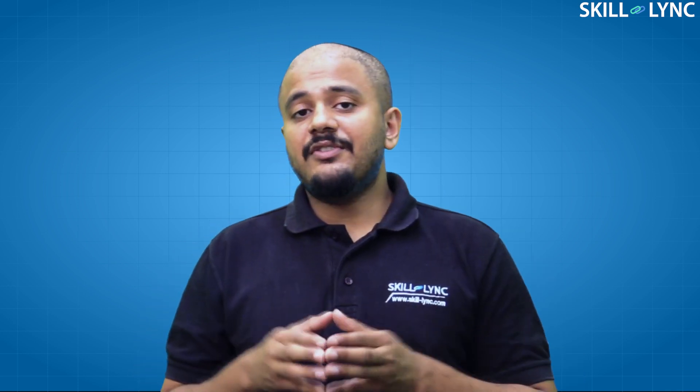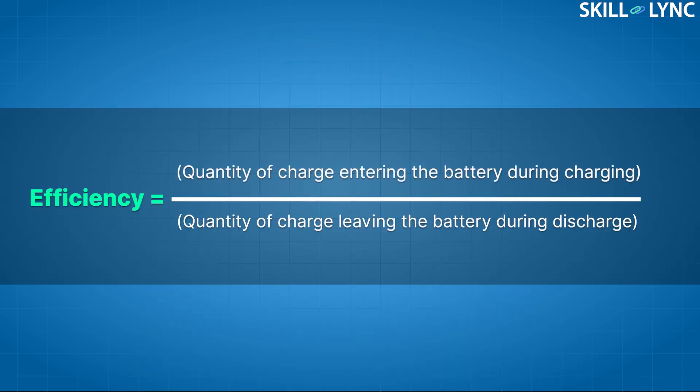The efficiency of a battery also plays an important role in its usage. Battery efficiency is a ratio of the amount of charge entering the battery during the charging phase to the amount of charge leaving during the discharge phase. This value is dependent on the rate of discharge — if the battery is discharged at a much faster rate, the efficiency reduces. Lithium-ion batteries tend to have very high efficiency of 92 percent against 60 percent efficiency of lead-acid batteries for similar capacity and discharge conditions.